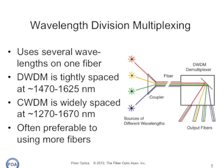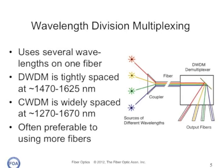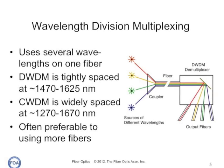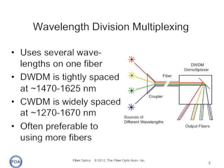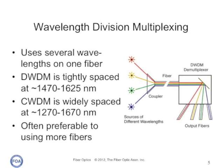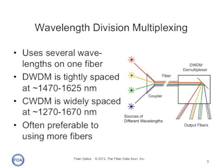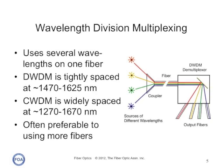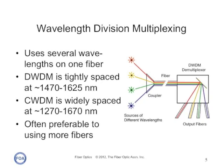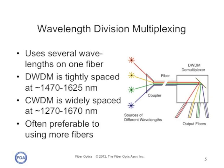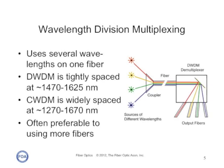Wavelength division multiplexing puts different signals on the same fiber at different wavelengths. DWDM, or dense wavelength division multiplexing, uses very tightly spaced wavelengths around 1470 to 1625 nanometers. Coarse wavelength division multiplexing uses much wider spaced wavelengths over the entire range of 1270 to 1670 nanometers and requires special low water peak fibers. Most telcos these days prefer to use more wavelengths instead of more fibers, because it's simpler and easier to implement.